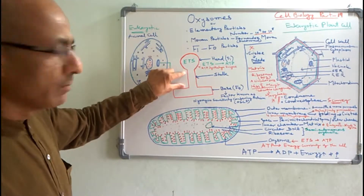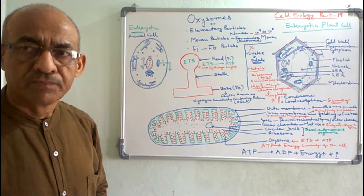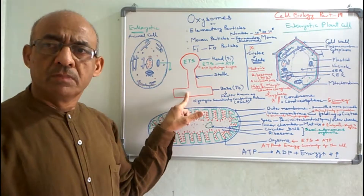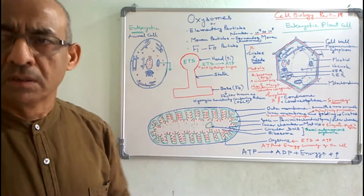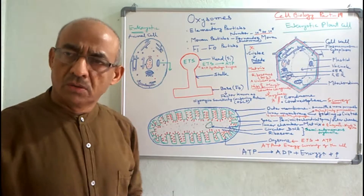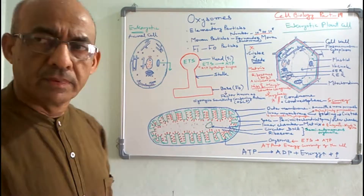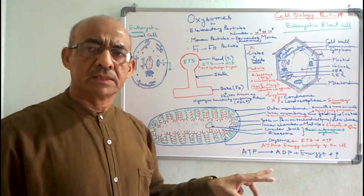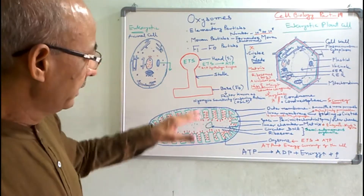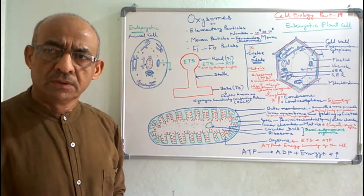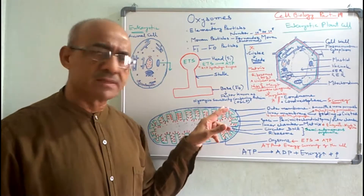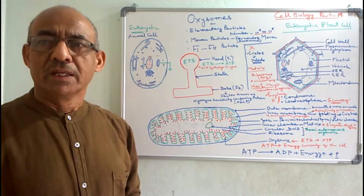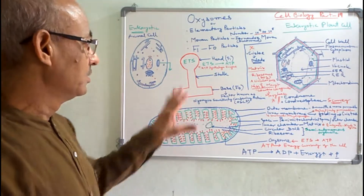And this middle part is the Stalk. Now we will discuss regarding the Base firstly. Base is the part by which all the oxysomes are attached; it is attached with the inner membrane of the mitochondria. It is also called as F0 because it is a factor known as oligomycin sensitivity conferring protein. So it is called the F0 part of the oxysome.